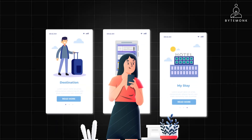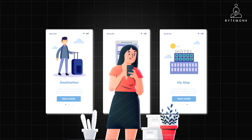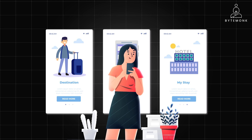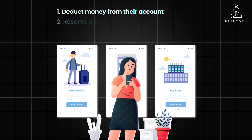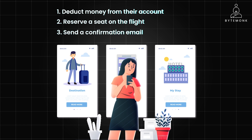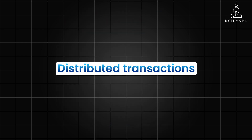Imagine a modern application where a user's action triggers multiple operations across different services or databases. For example, when a user books a flight, the system might need to deduct money from their account, reserve a seat on the flight, and send a confirmation email. What happens if one of these operations fails? You don't want the user's money deducted without a confirmed booking, or vice versa. And this is where distributed transactions become essential.